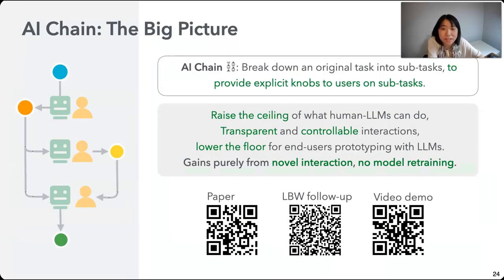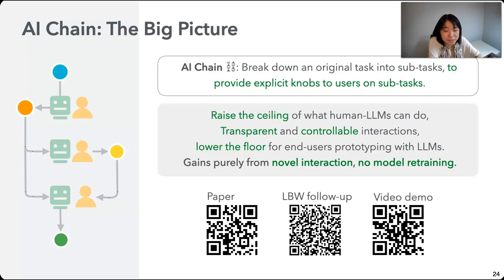As a recap: AI Chains breaks down an original task into subtasks, and with this we raise the ceiling of what humans can do together with large language models in a more transparent and controllable way. We also lower the floor for end-users playing with large language models. More importantly, we achieve all of this just through interaction design, without having to change the model itself. Please check out our paper and demo video for more details. Thank you!